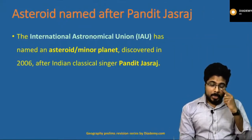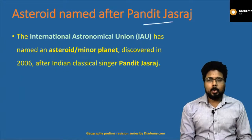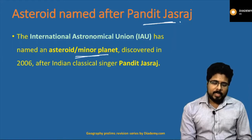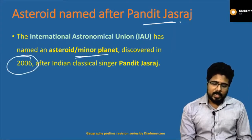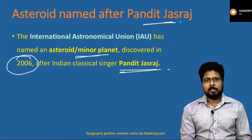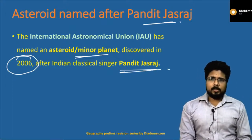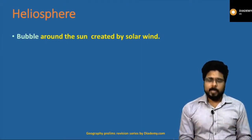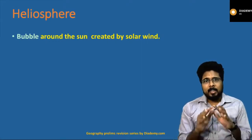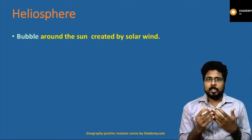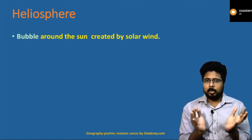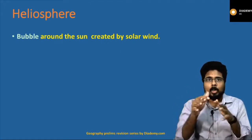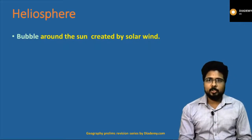First: an asteroid has been named after Pandit Jasraj. The International Astronomical Union named a minor planet, discovered in 2006, after Indian classical singer Pandit Jasraj. Remember: asteroid named after Pandit Jasraj. Next: Heliosphere. The Heliosphere is basically the bubble around the sun created by the solar wind — the region up to which solar winds are present is called the Heliosphere.